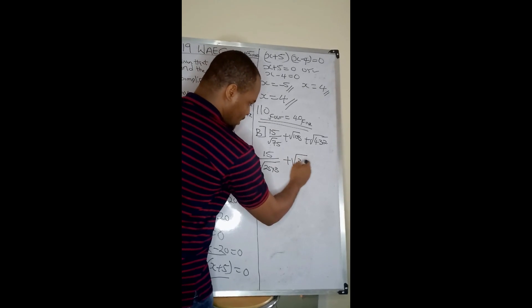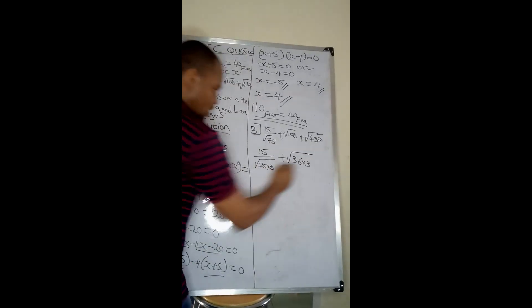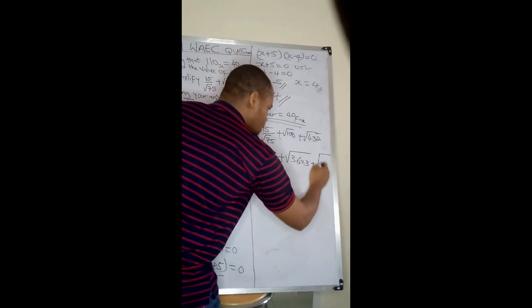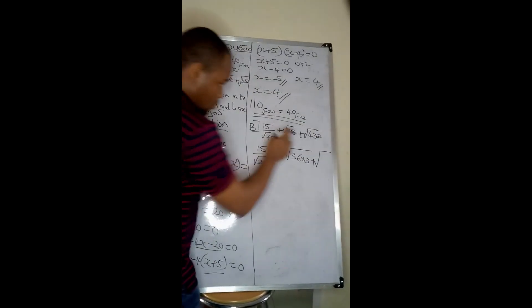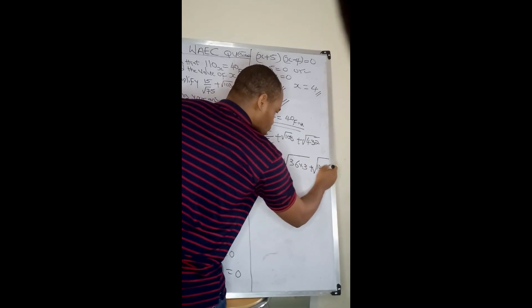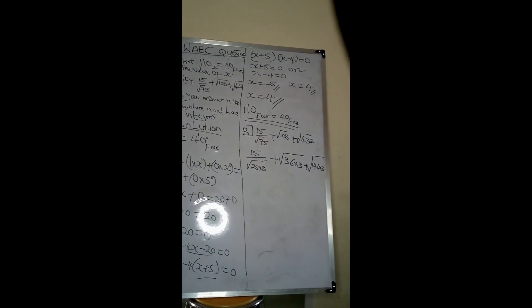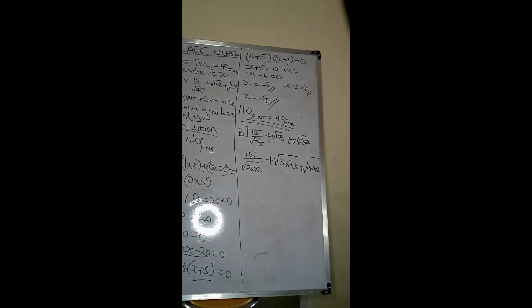So 3 times what would give me 108? I'll have 36 times 3, which is also a perfect square, plus 3 into this one. What do I have? 144 times 3. You can see that I've been able to reduce all into a root of 3 with a perfect square.